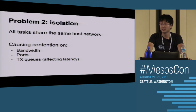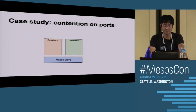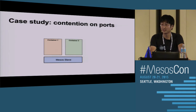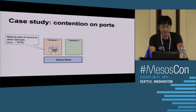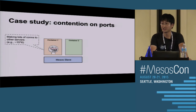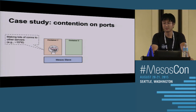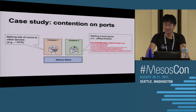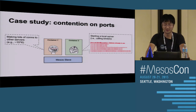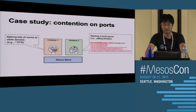The second problem is isolation. All tasks share the same host network, which can cause contention on bandwidth, ports, and TX queues - that affects latency. For example, say you have two containers running on the same MESOS host: one container making a lot of connections - say 10 to the power of 6 connections to some servers - and then another container trying to call bind on port zero. That can fail because container one used all the free ports on that host.